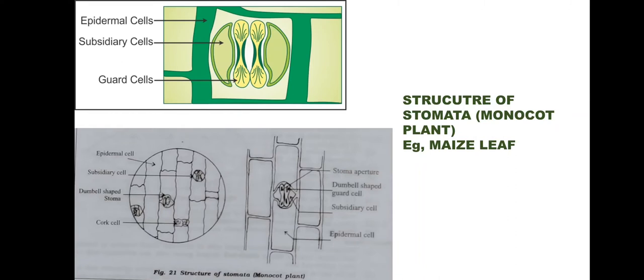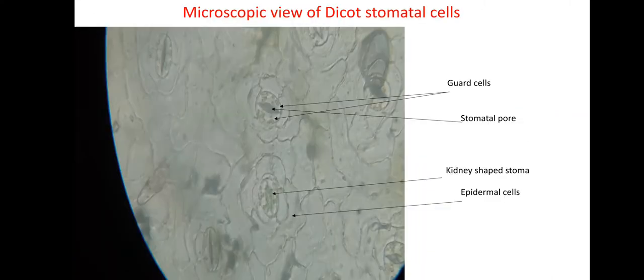The next slide shows the structure of stomata in a monocot plant — example, the maize leaf. The striking difference is that while dicot stomatal cells are kidney-shaped, the monocot stomatal cells are dumbbell-shaped. These dumbbell-shaped cells are also called guard cells. In and around the guard cells there will be epidermal as well as subsidiary cells. The lower diagram shows how to draw the structure of stomata in a monocot plant.